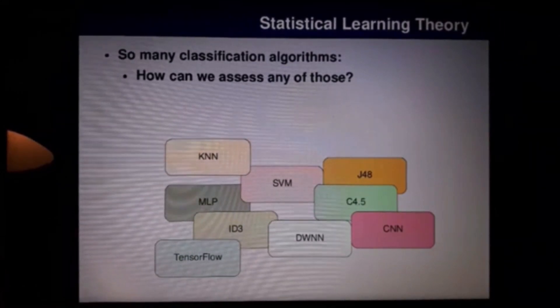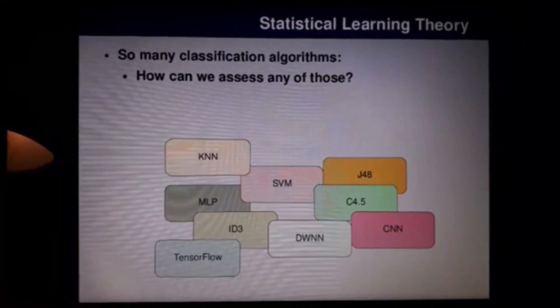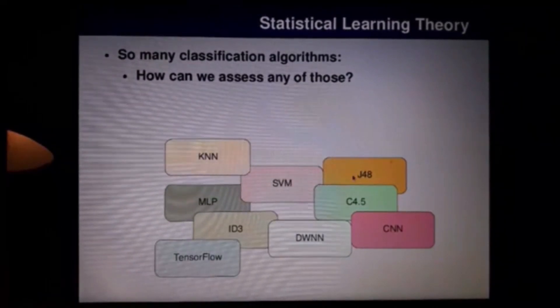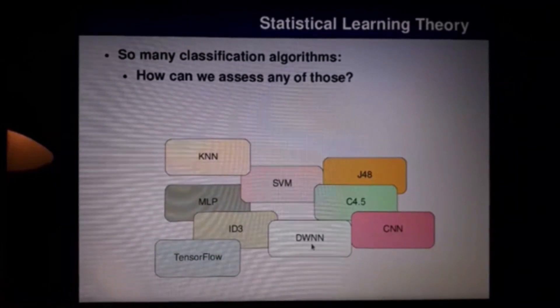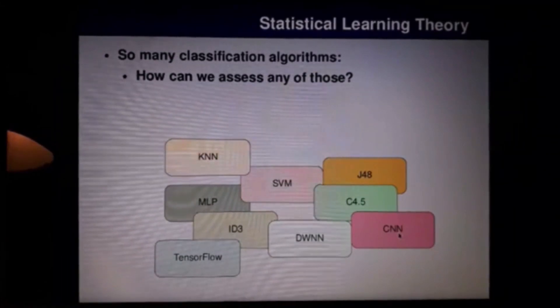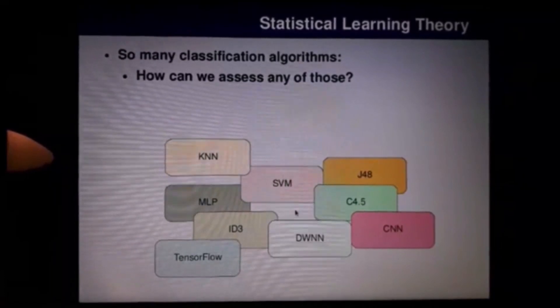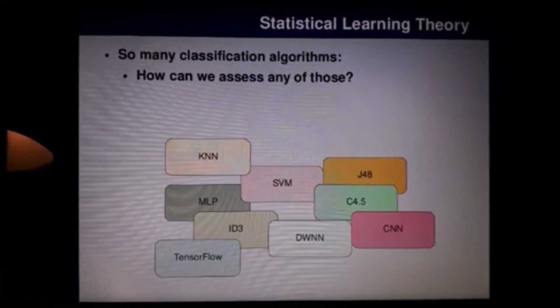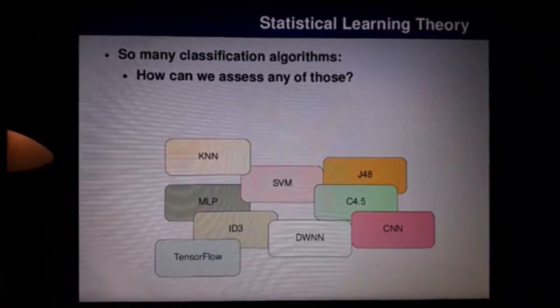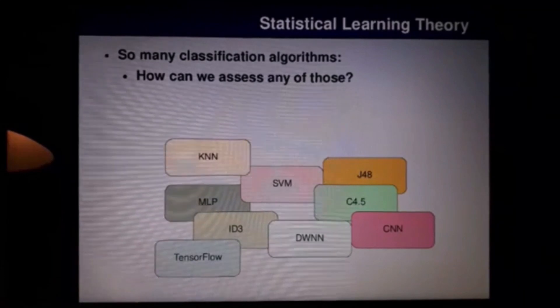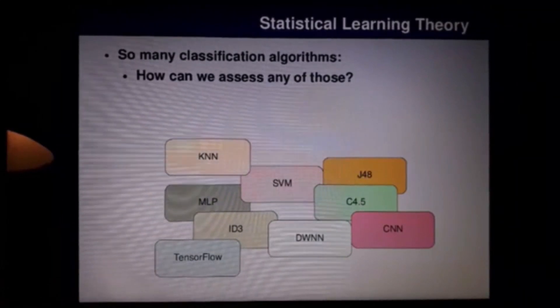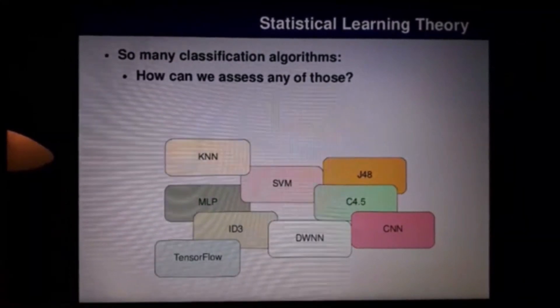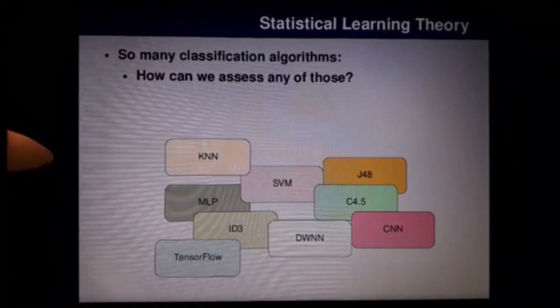In fact, people use a lot of algorithms such as KNN, SVM, J48, DWNN, ID3, multi-layer perceptron, and convolutional neural networks, TensorFlow, and so many stuff. But they never know if that's gonna work for real, or if that's been working just by chance, if it's like a result in their own data set. But when they bring that solution to tackle real problems, or real scenarios, if that's gonna work properly.